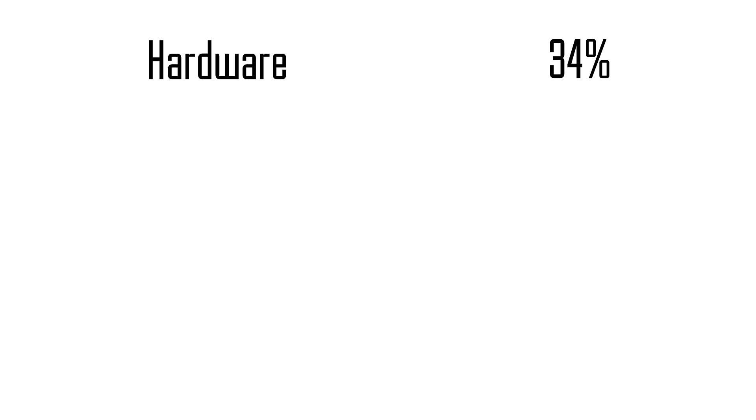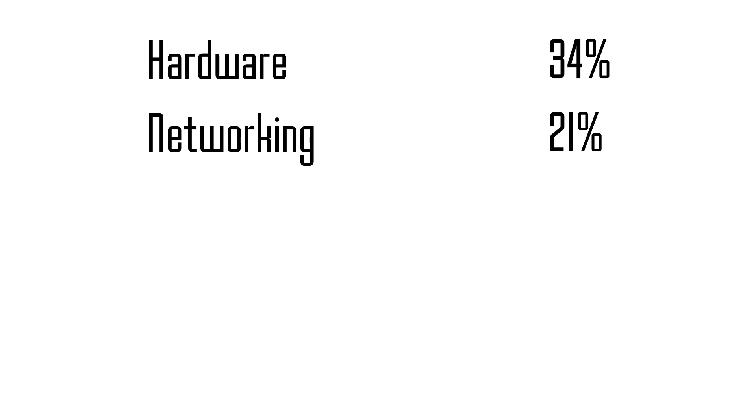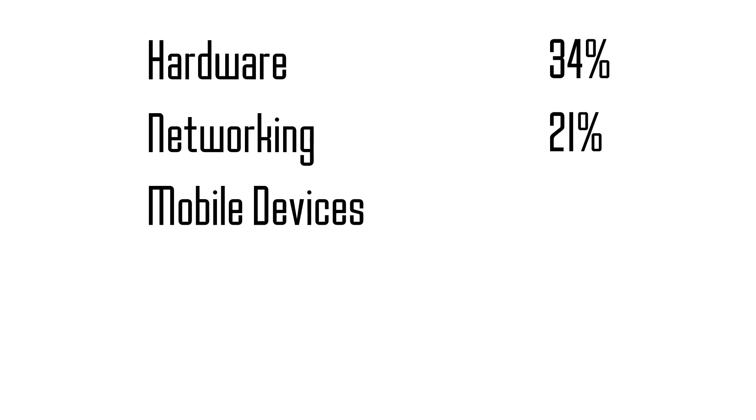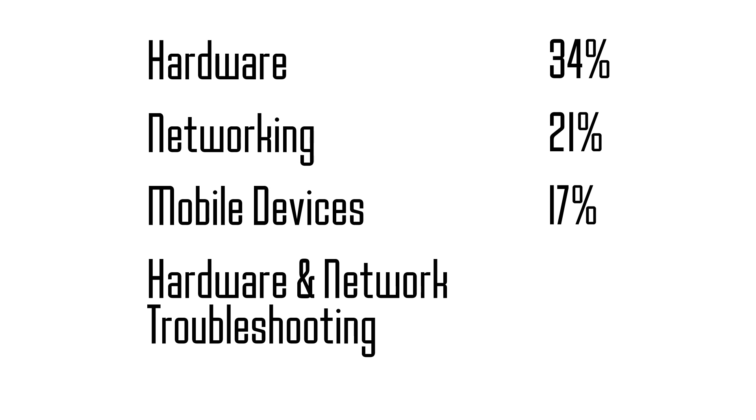The best way to understand 220-901 is to understand the four objectives covered on that exam. In order: number one is Hardware at 34% of the exam; number two is Networking at 21%; number three is Mobile Devices at 17%; and number four is Hardware and Network Troubleshooting at 28%.